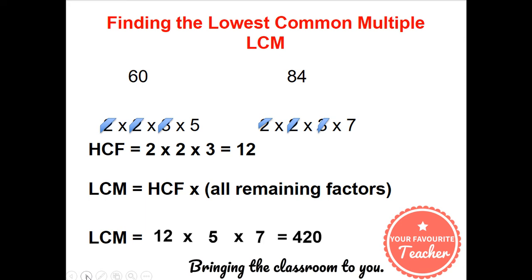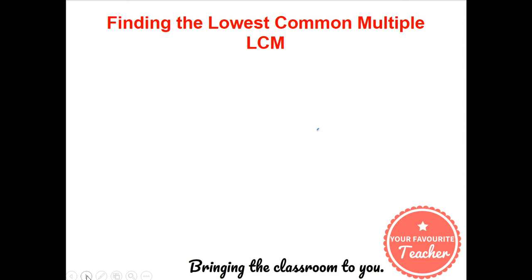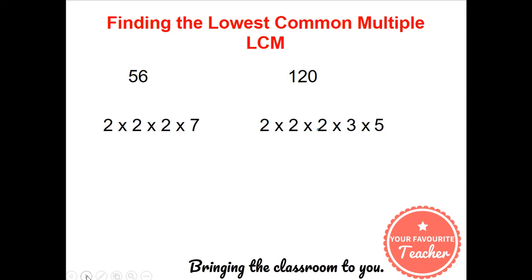So let's do another example. Let's get the lowest common multiple of 56 and 120. Once again we're going to get the prime factors. So in this case those are the prime factors of 56 and 120.